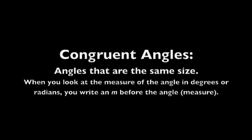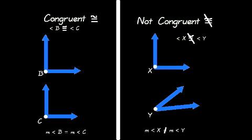You also need to know about congruent angles. Congruent angles are the same size. If you're measuring them, you put an M in front of the angle sign. On the left you see two congruent angles. Angle B is congruent to angle C, and the measure of angle B is equal to the measure of angle C — it looks like 90 degrees. When we talk about the measure of an angle, we're talking about the actual degrees.